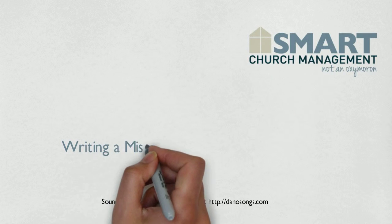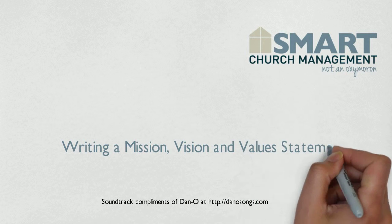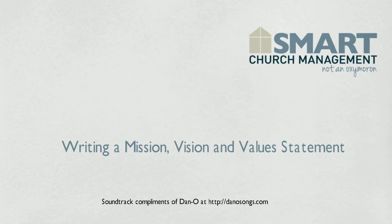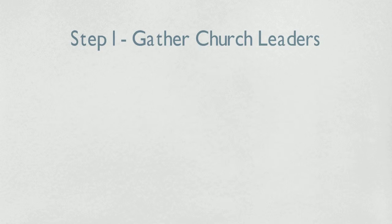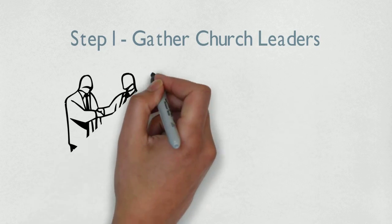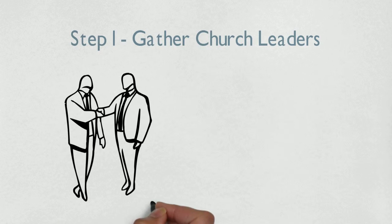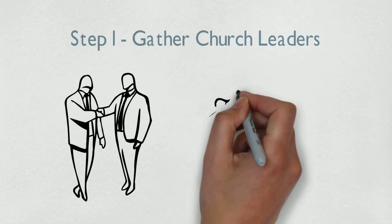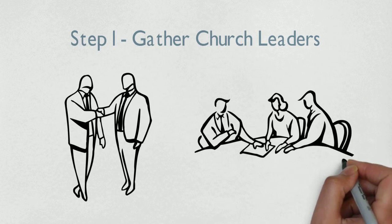We explained why it is important to write a mission, vision, and value statement. Now let's talk about how to do it in eight easy steps. Step number one: gather church leadership. Those responsible for the church should participate in the development of the mission, vision, and value statement. Identify a leadership team who care about the ministry and have responsibility for the church.